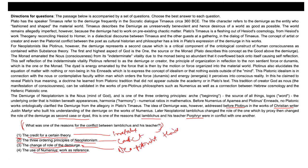So Option 3 is a suitable answer, but let's also look at Option 4. Option 4 states the use of Numinus's work as reference, but this is not mentioned in the passage as a reason for conflict. Since it is not mentioned in the passage, it cannot be called a cause of conflict between Yambli Kosh and his teacher. Therefore, Option 3 — the change of role of the Demiurge — is the correct answer.